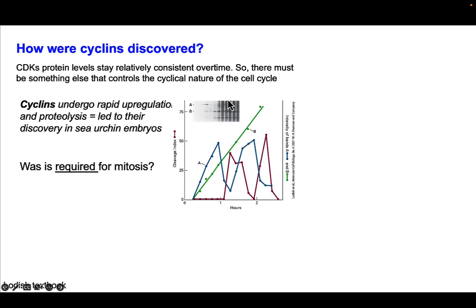Interestingly, at the same time they were following cell division of these cells, they found that when protein A peaked, cell division would occur, and then protein A would drop off. Then when it peaked again, cell division would occur again and protein A would drop off. This contrasted with protein B, which continued to increase throughout the cell cycle. So protein A correlated with cell division, but it wasn't yet known if it was required for mitosis.